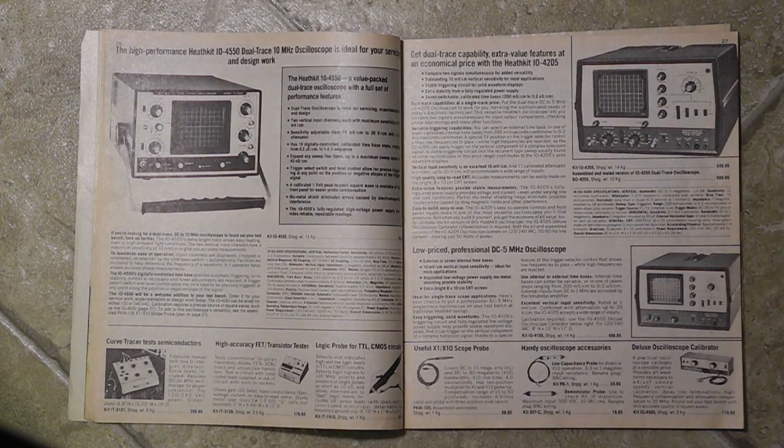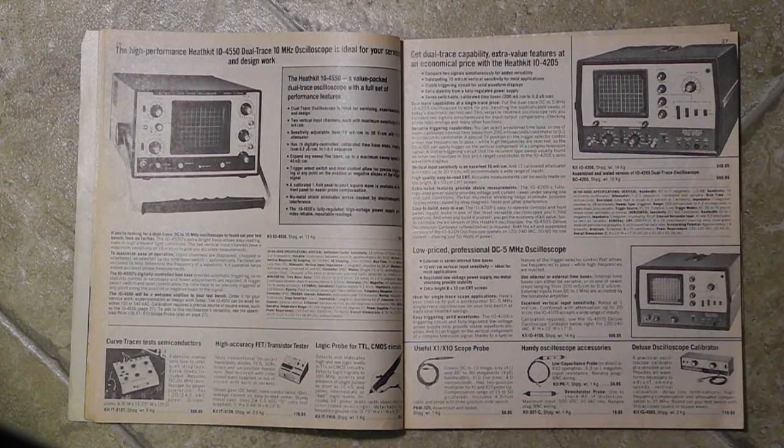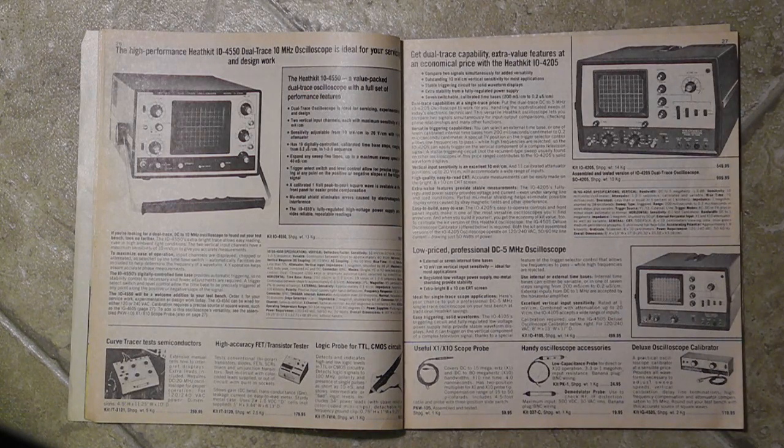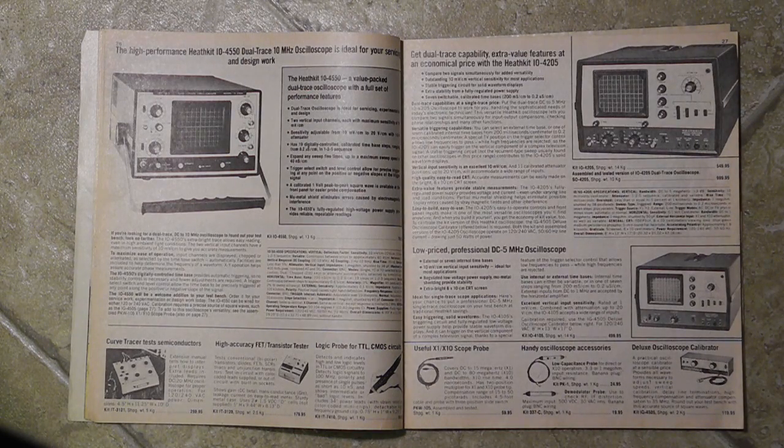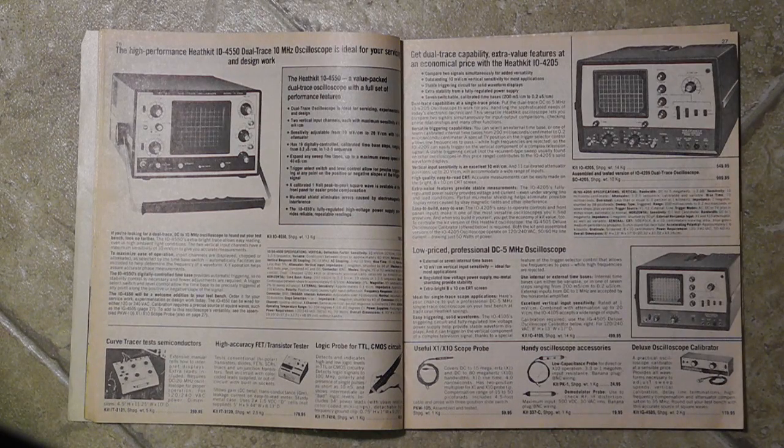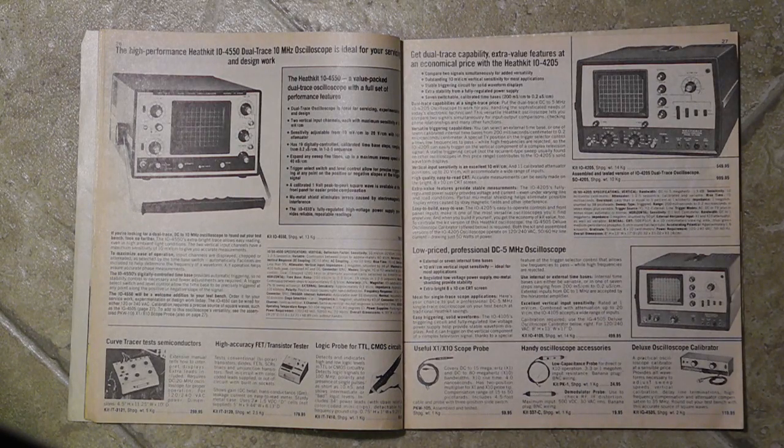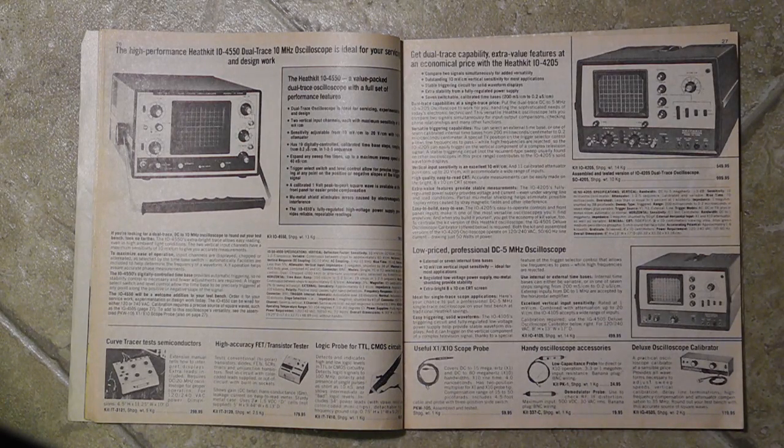Over the years Heathkit's line of test equipment typically included a number of oscilloscopes with various price ranges and features. In fact the company's first electronic kit was the O1 oscilloscope introduced in 1947. It sold for $50, a price that they achieved by offering it as a kit and using some war surplus parts.